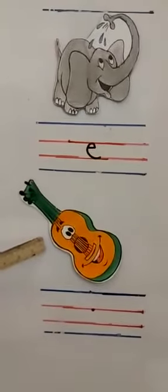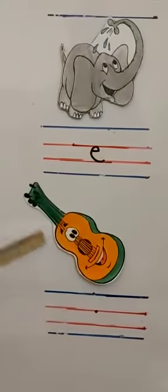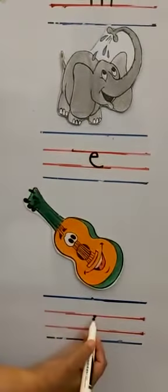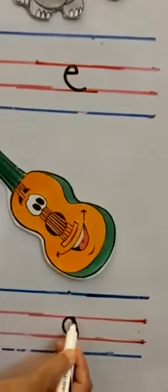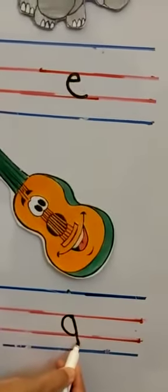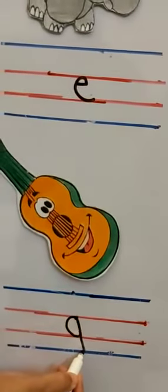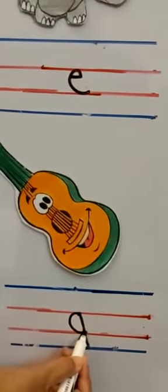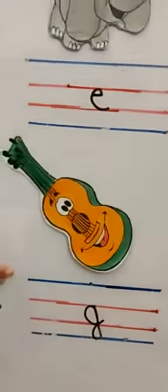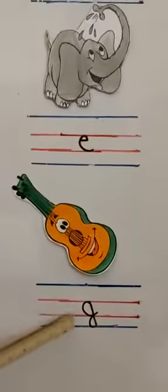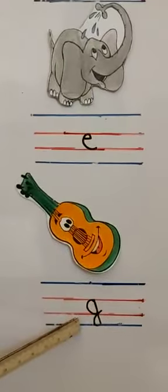This is a guitar. Yes, you are right. Put your pencil on the dot. Make a semicircle, go up, close it, come down straight. Touch line number four. Make a loop and cut the straight line, and stop a little above line number three. This is my letter G. Letter G comes in the lower three lines.